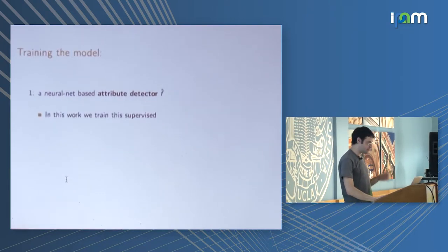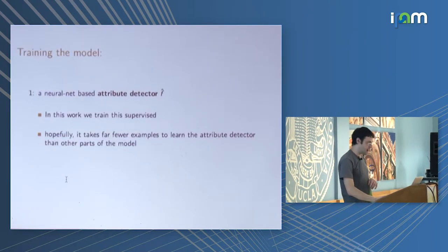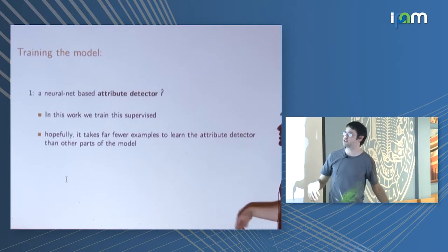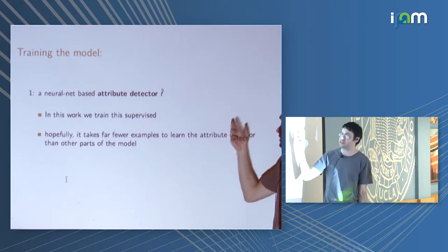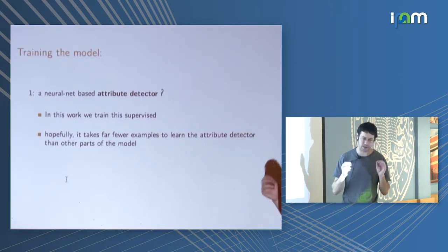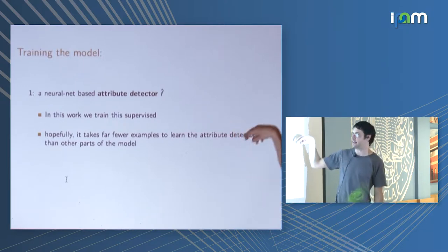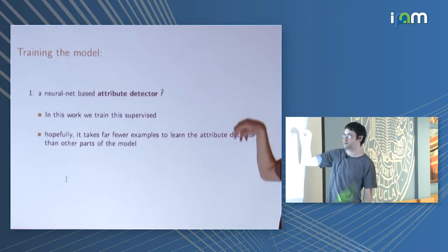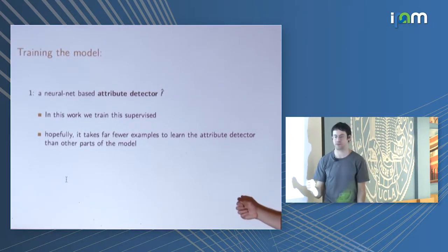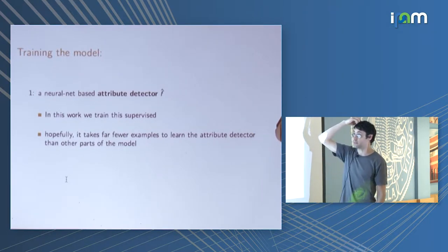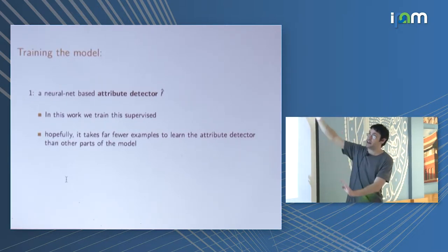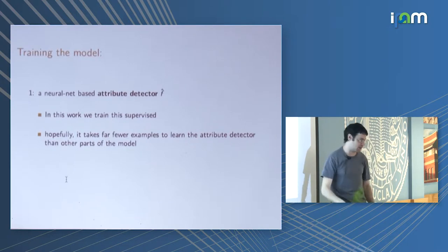The attribute detector is trained supervised. If we have to use a lot of supervision here, it's terrible. But it turns out — at least in the examples we use, which are admittedly toy examples but reasonable ones — it takes very few examples to learn the attribute detector relative to how many steps RL would need to solve the same problem.